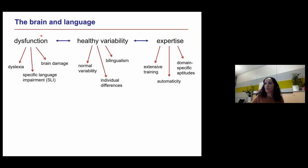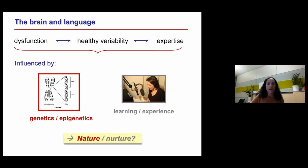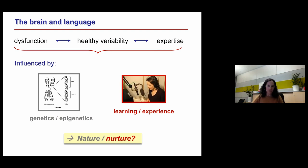One can think about research on the brain and language as spanning a continuum — ranging from individual differences and healthy variability, with extensive domain-specific training leading to expertise, and at the other end, language disorder, both acquired and developmental. These different domains of processing are influenced by pre-existing, potentially genetic, innate factors, and also by experience-dependent plasticity. In our work, we try to explore both sides of the nature-nurture question.